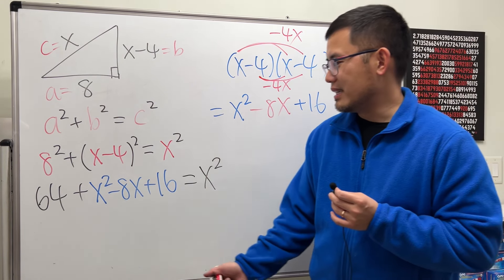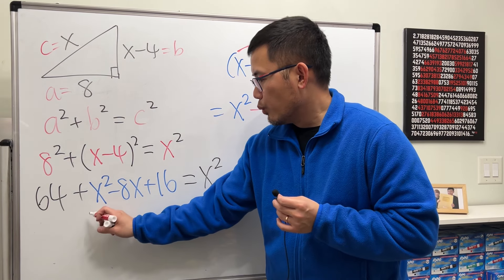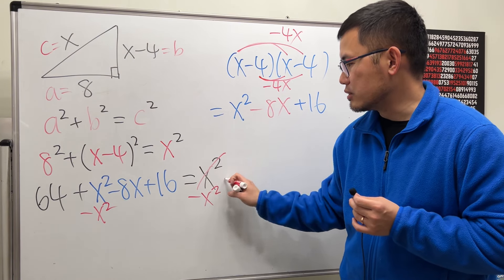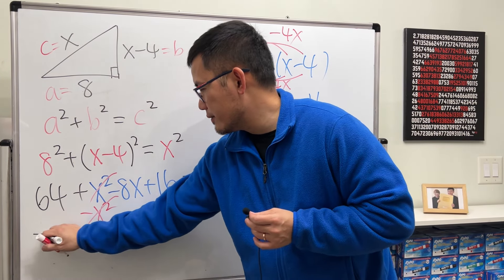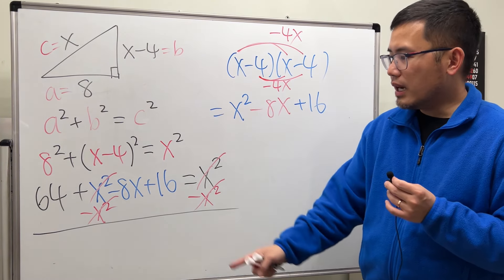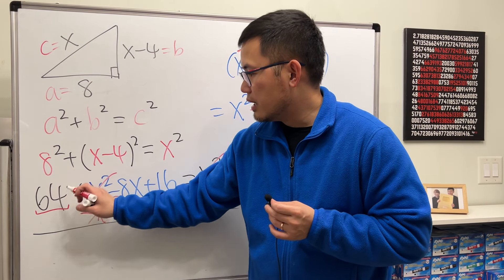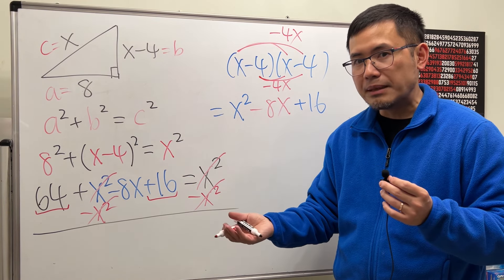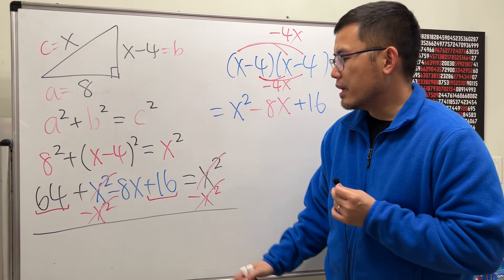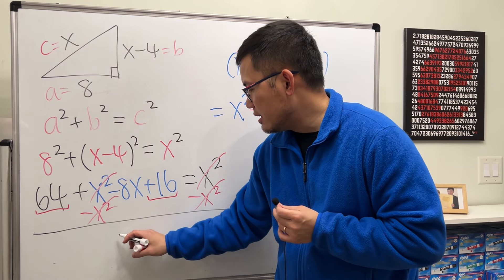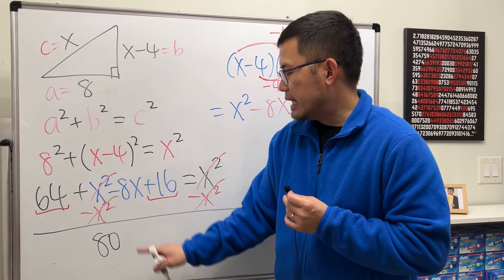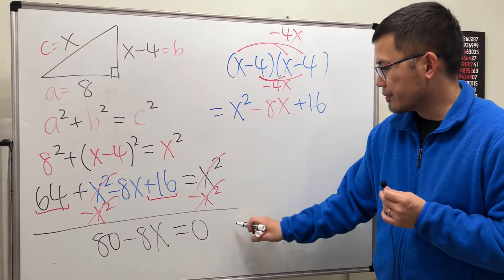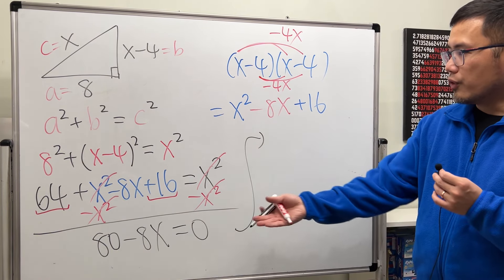And then we can just solve for the x. But notice that we can first subtract x-squared on both sides. And then they just cancel. Pretty nice. And then right here on the left-hand side, notice that we have 64 plus 16. They are on the same side, so we can just combine them. And together, that will be 80. And then bring down the minus 8x. And that is equal to 0.